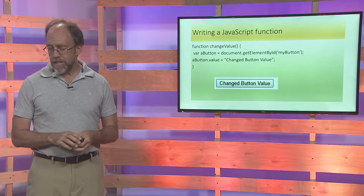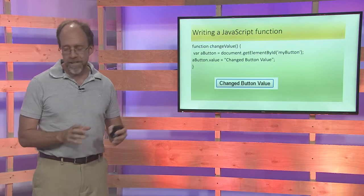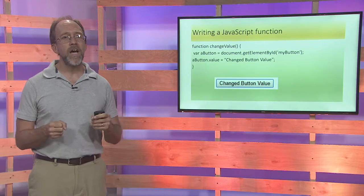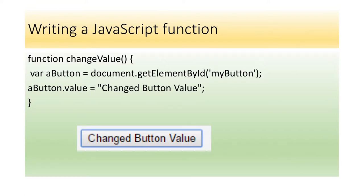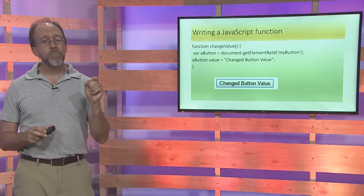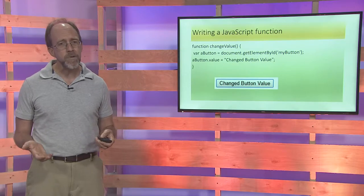Let's write some JavaScript code. I'm going to write the function changeValue. First, I'll get that button: var aButton equals document.getElementById('myButton'). The aButton is now that object. If you recall, aButton had a property called value. I'm going to change that value to 'changed button value'. So if the user clicks on the button, the onclick property calls that function, and the value of the button — which is what you see on top — gets changed to that new value. A lot happened with just a little bit of code.